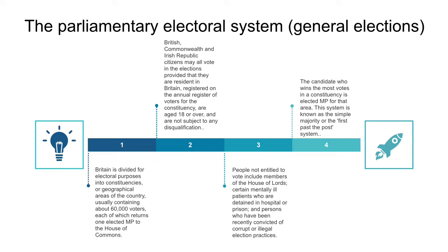British and Irish Republic citizens may all vote in the elections, provided they are resident in Britain, registered on the annual register of voters for the constituencies, and are aged 18 or over, and are not subject to any disqualification.